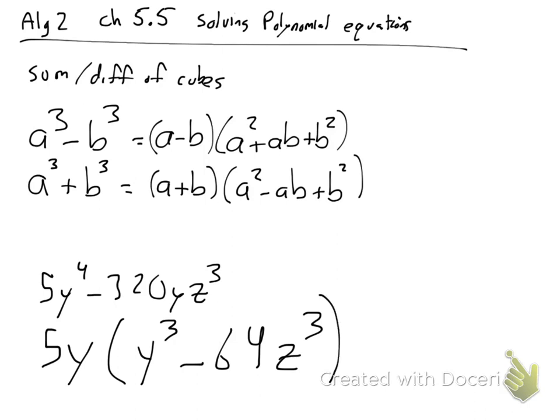Now the question comes down to is y to the third a perfect cube? Yeah. Is 64 a perfect cube? Yes, a 4. And z cubed is z. So if you remember back to what I had you do before, you would want to fill in to find a and b. So it's y being cubed, you get y cubed, and it's 4z to get to 64z cubed. That's a and that's b.